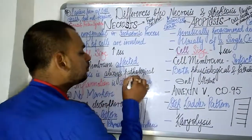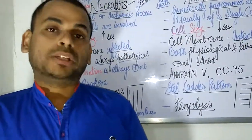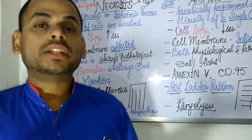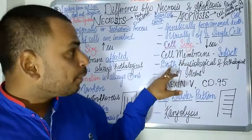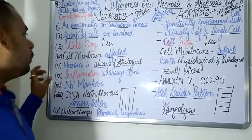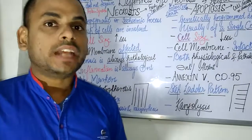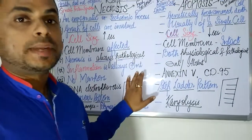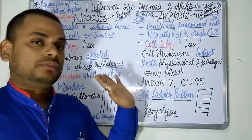Necrosis is always pathological — there is always some pathology associated with the tissue or organ undergoing necrosis. Whereas apoptosis can be both physiological and pathological. Additionally, inflammation is always present in the case of necrosis, whereas in the case of apoptosis, inflammation is absent.